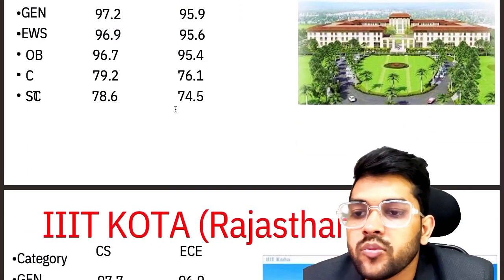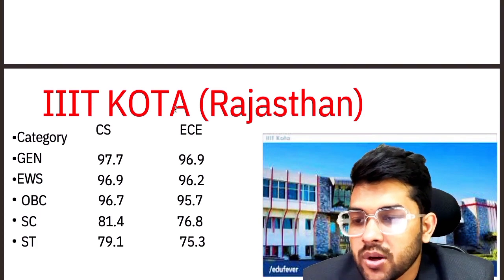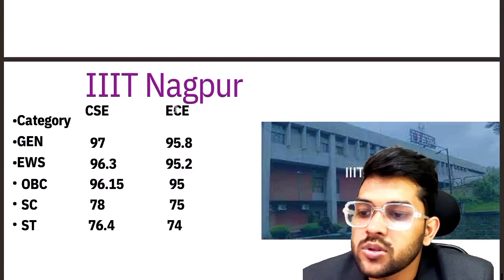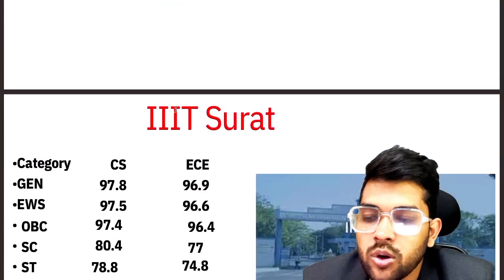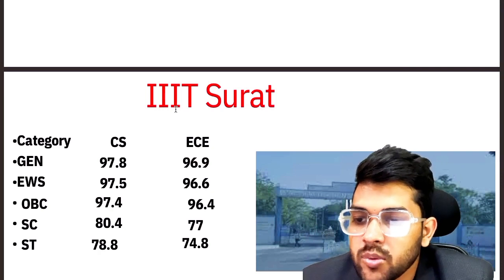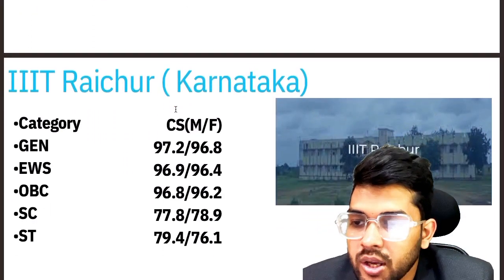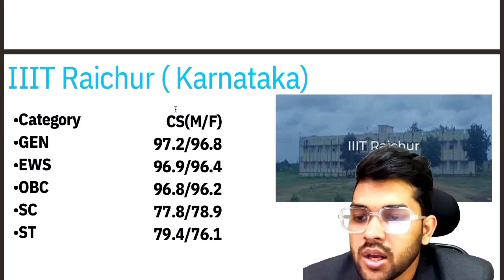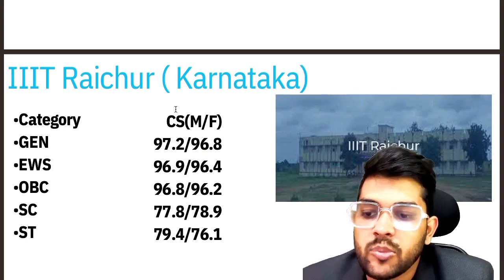For IIIT Kota: 97.7, 96.9, 96.9, 96.7, 81.4, 79.1. For IIIT Nagpur: 97, 96.3, 96.15, 78, 76.4. For IIIT Surat: 97.8, 97.5, 97.5, 97.4, 80.4, 78.8. For IIIT Raichur: 97.2, 96.9, 97, 96.8, 77.8, 79.4. These cutoffs cover CSE for General, EWS, OBC, SC, and ST categories.